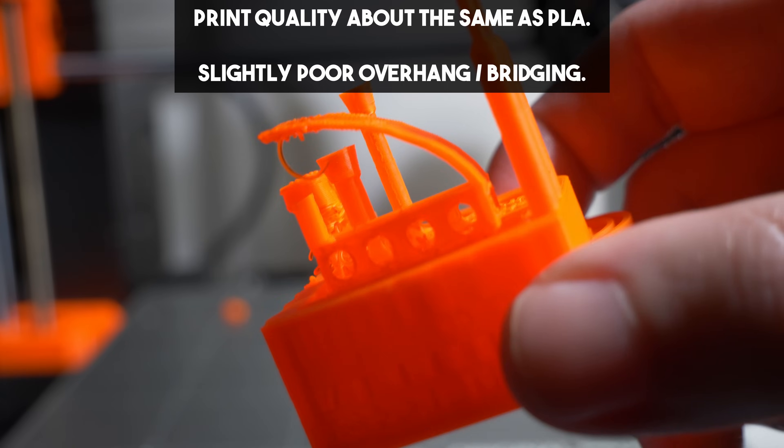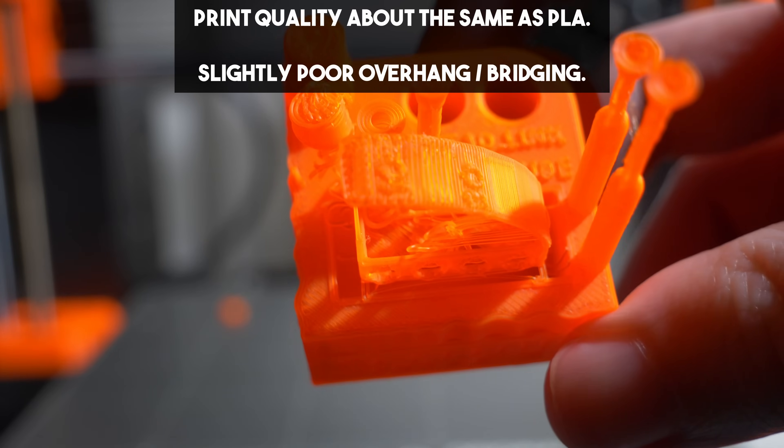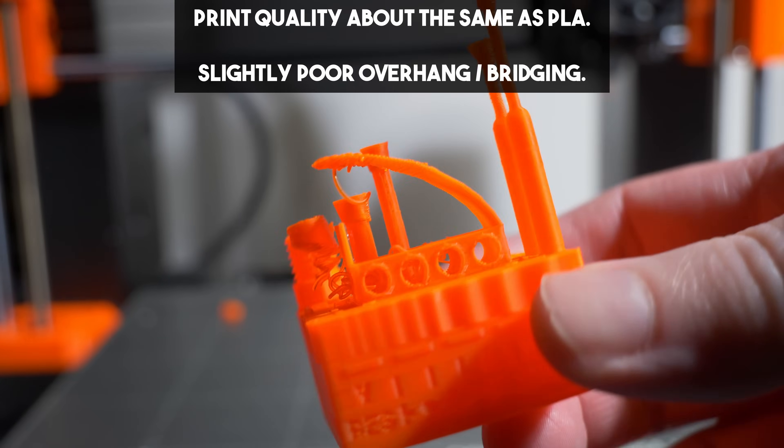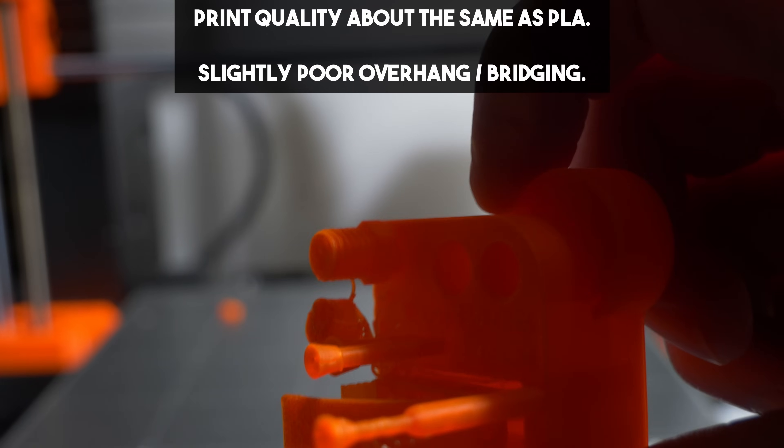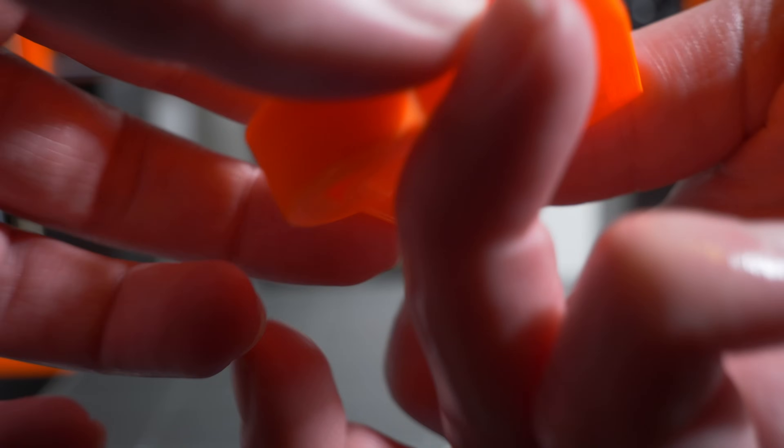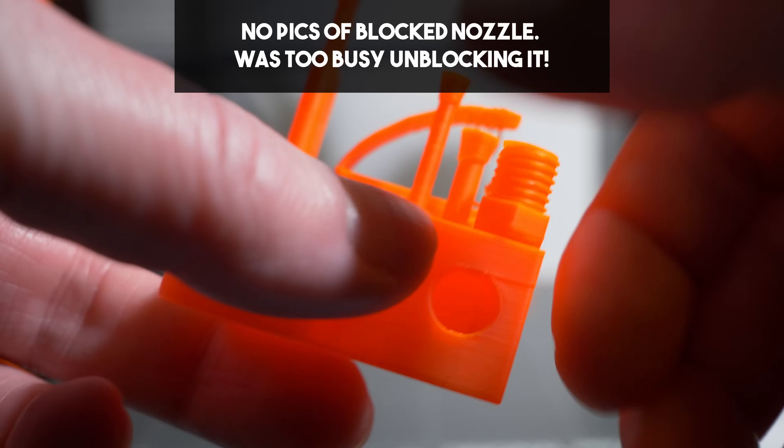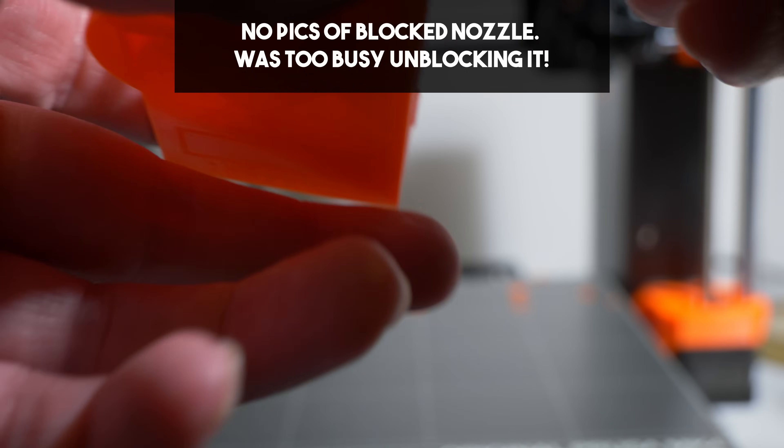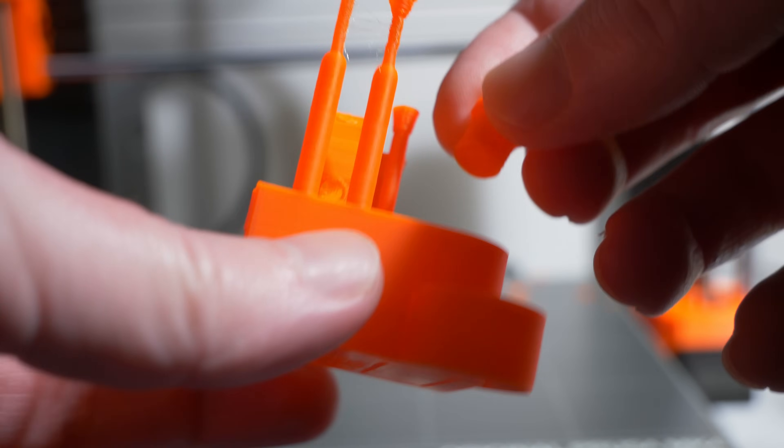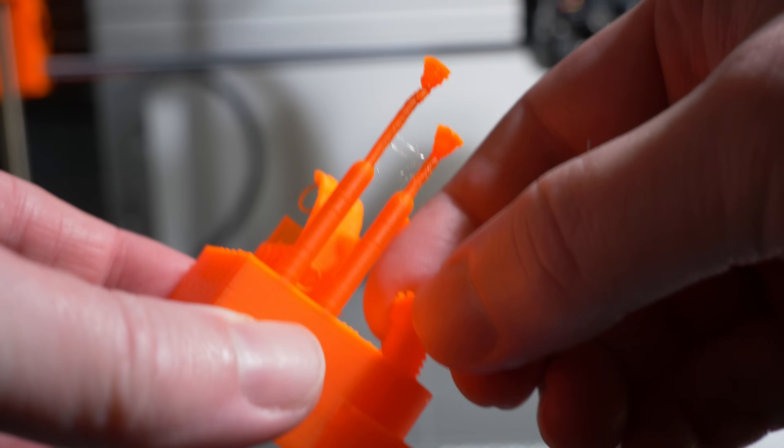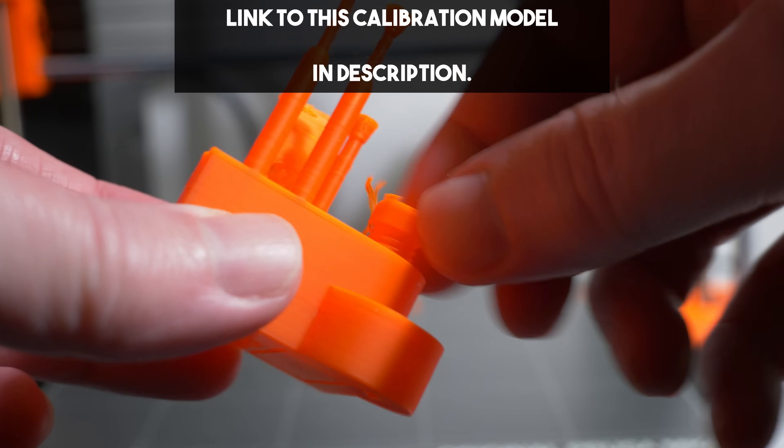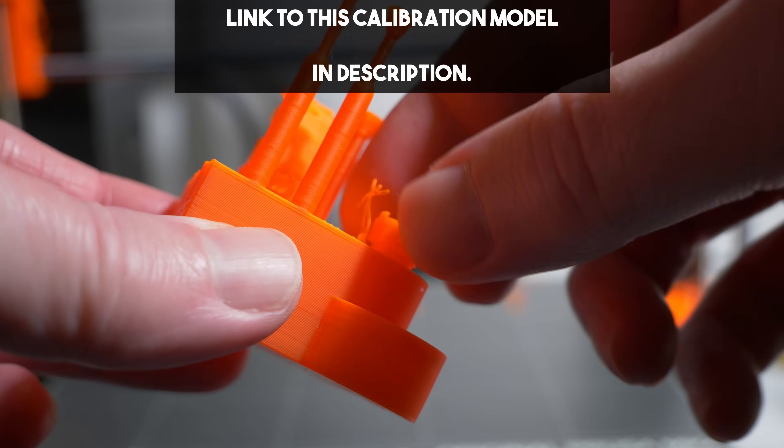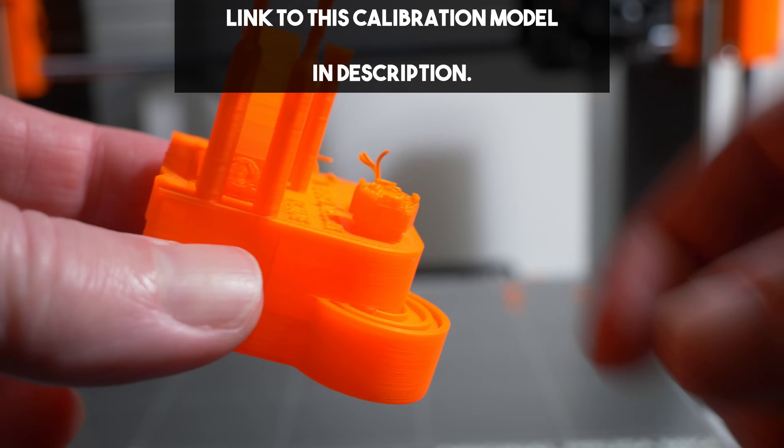This is also a problem for enclosed machines. At these temperatures, PVB is a fast way to get heat creep in your nozzle. I got a blocked 0.2 bamboo nozzle, which is a nightmare to clear. You absolutely need to open the door and lid on an enclosed machine if you're printing PVB. That is not optional.